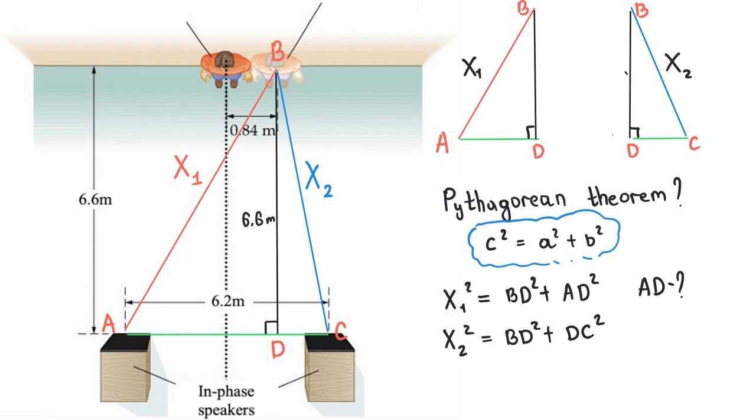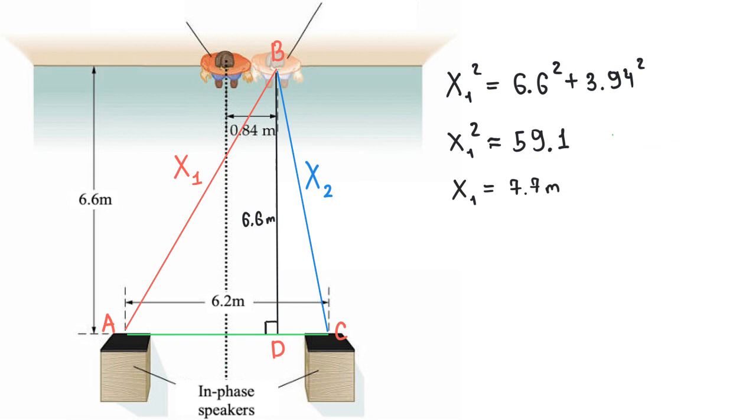It is equal to half of AC, which is 3.1 plus 0.84, which comes as 3.94. Now, we can solve for x1. After some mathematical calculations, we have x1 equal to 7.7 meters.